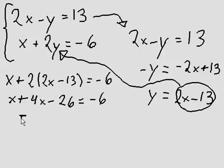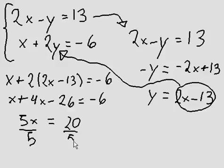So x plus 4x is 5x. Now I can add 26 to both sides, so I can get rid of this guy because I want to take it to the right side of the equation. Negative 6 plus 26 is positive 20. Now I can just divide both sides by 5, and I have found x. So x is 4.